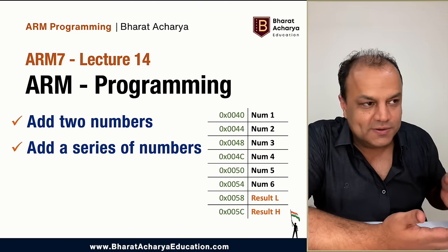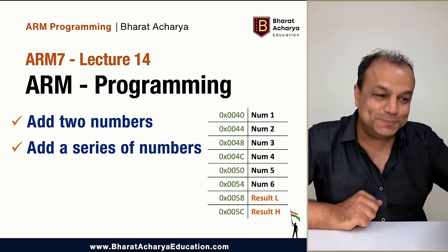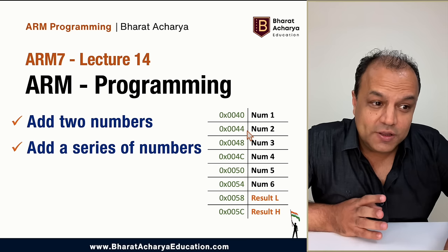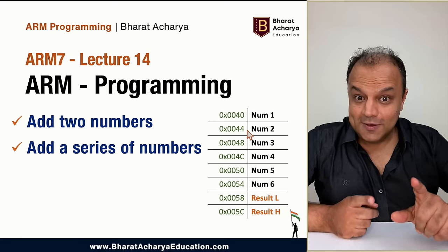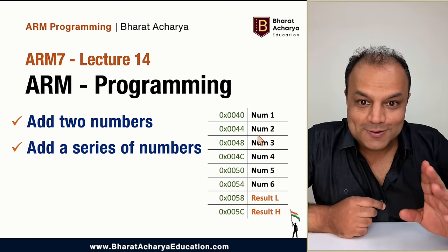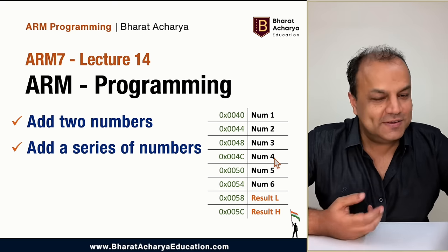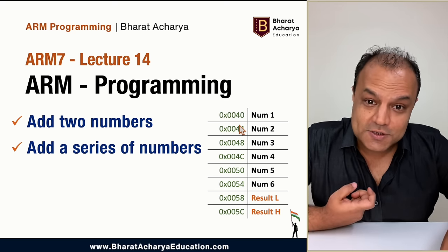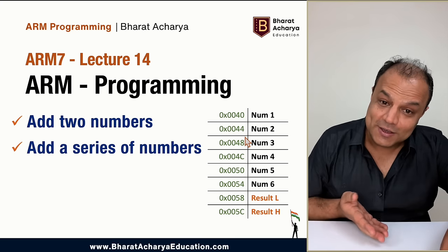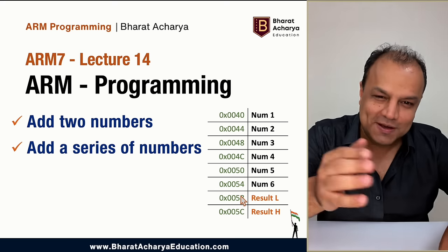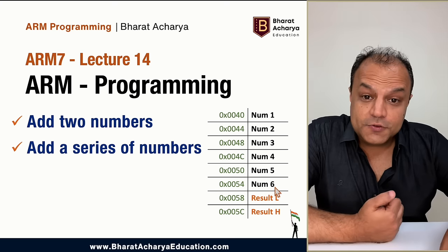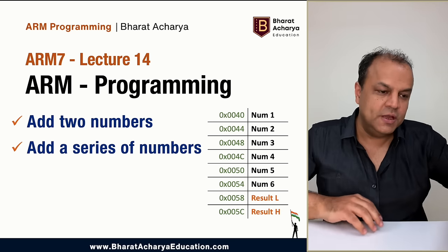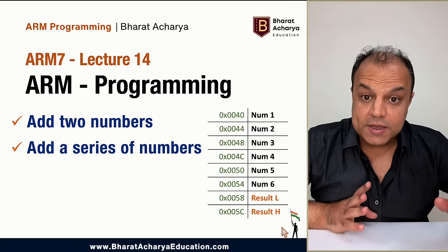What works for four numbers will work for 400 — it's just the loop count that changes. In ARM, every data is 32 bits by default, so it takes four memory locations. For example, addresses 40, 41, 42, 43 hold the first data, and 44 is the next — so they are sequential even with a gap of four. You'll add the series, get a sum, and store any carry in a higher word at a designated location.